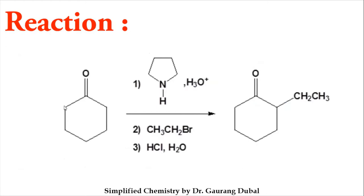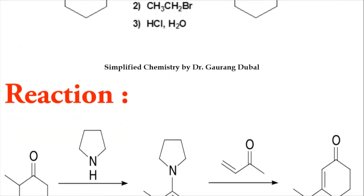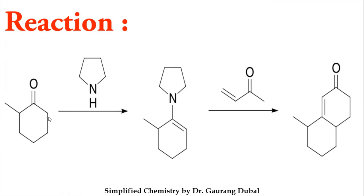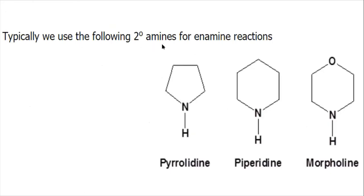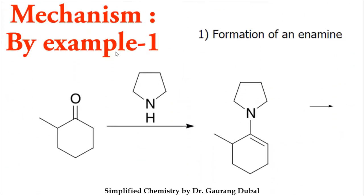First we will see one reaction: cyclohexanone, where on the alpha position you may have alkylation with ethyl bromide — introduction of an ethyl group on the alpha position — and that is known as the Stork Enamine reaction. Another example: we can take 2-methylcyclohexanone and get it converted into a cyclic compound using methyl vinyl ketone. Typically, secondary amines like pyrrolidine, piperidine, or morpholine can be used for the Stork Enamine reaction.